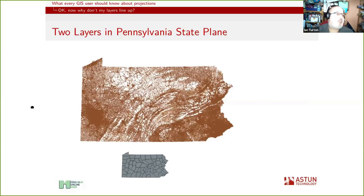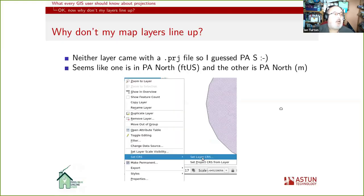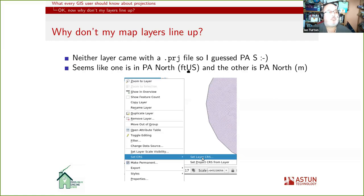Why don't my layers line up? I used to live in Pennsylvania so I picked Pennsylvania data — I've got two layers, one of roads and one of county boundaries, and I want to do some analysis. They're in Pennsylvania State Plane of some sort I think, so I just dragged them into QGIS to see what would happen. And you can see they don't line up — that's what it actually looked like. Neither layer came with a projection file. I guessed it was Pennsylvania South, but in fact one of them is in Pennsylvania North US feet and the other is in meters, which is why one of them is three times bigger than the other.